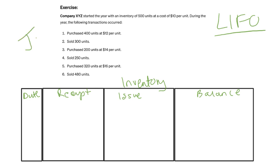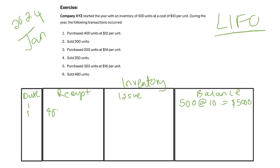Let's assume this is January 2024. Company XYZ started the year with an inventory of 500 units at a cost of $10 per unit. So on January 1st, our opening balance is 500 units at $10, giving us $5,000. Also on January 1st, we purchased 400 units at $12, which is 400 × 12 = $4,800.